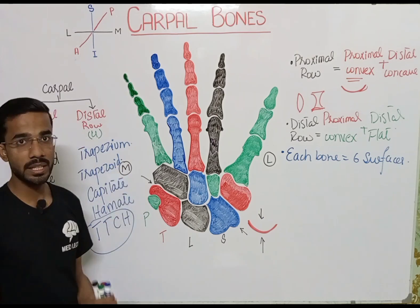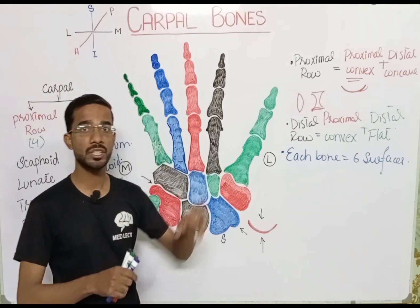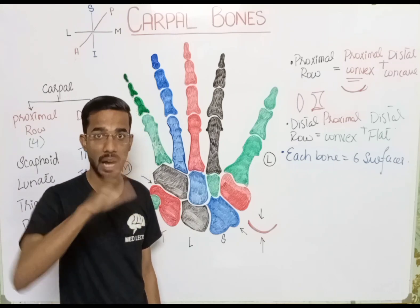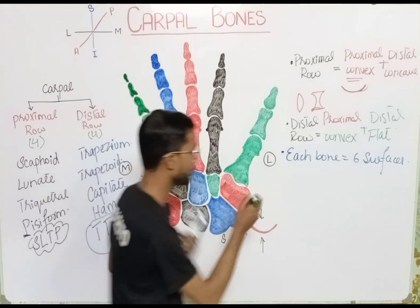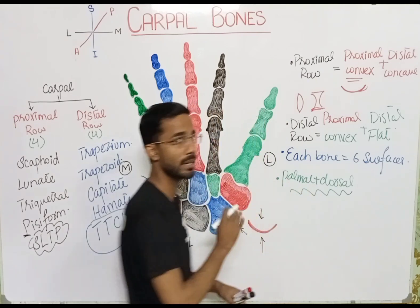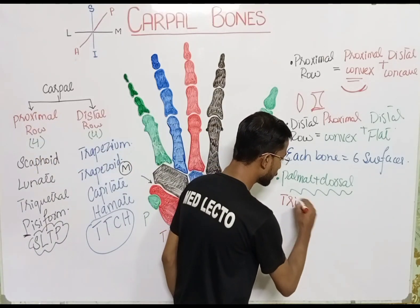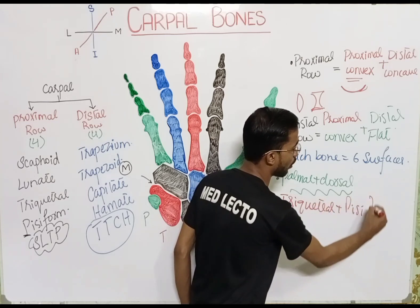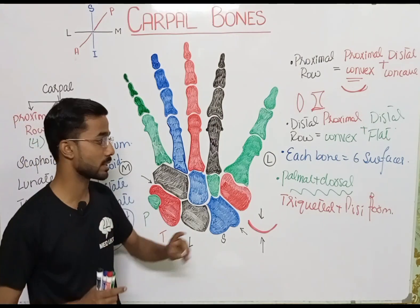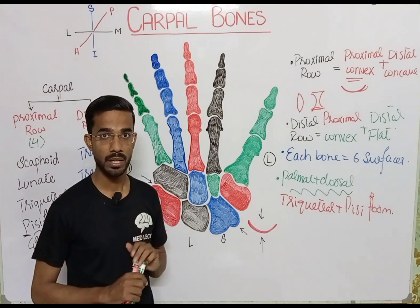Each carpal bone has two aspects: the palmar aspect on the palm side, and the dorsal aspect on the opposite side. At the dorsal and palmar surfaces, there is no articular attachment for any carpal bone — except two bones: the triquetral and the pisiform. These two bones have attachments at the dorsal and palmar sides, but all other carpal bones have no articular surface at the palmar and dorsal surfaces.